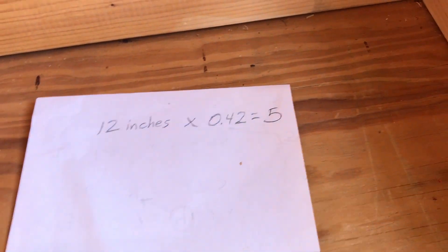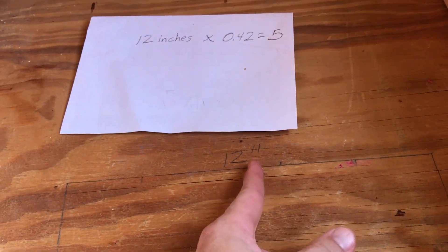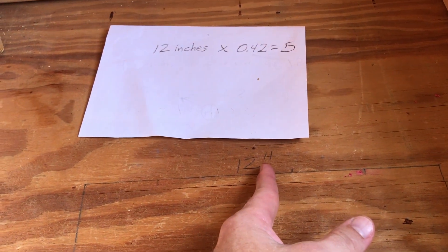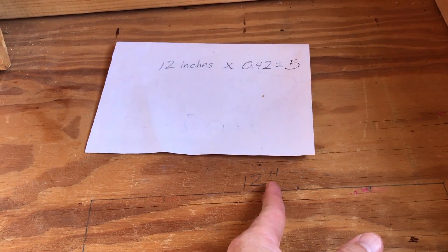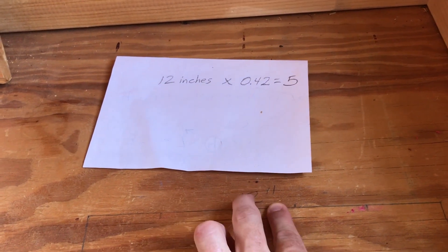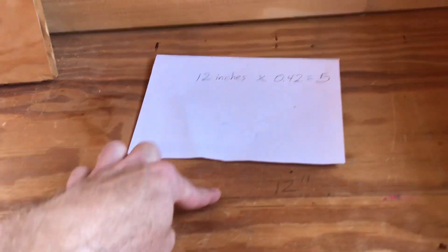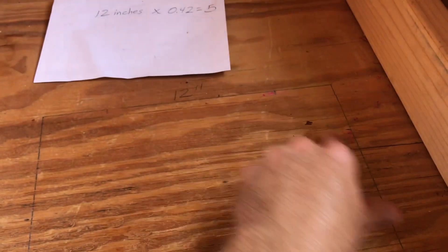What you need to do now is come to your square and find the middle of your side — in this case, 6 inches. You take 5, the answer of your math equation, and divide that in half, so that'll be 2.5. Then measure over 2.5 inches and make a mark. Do that all the way around the square, then connect the lines.